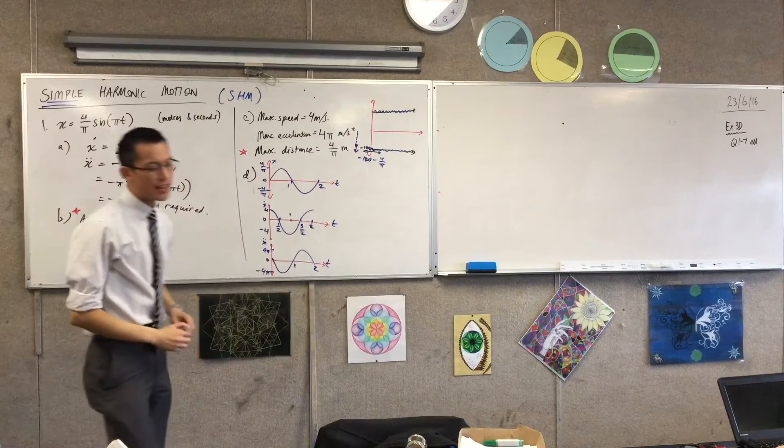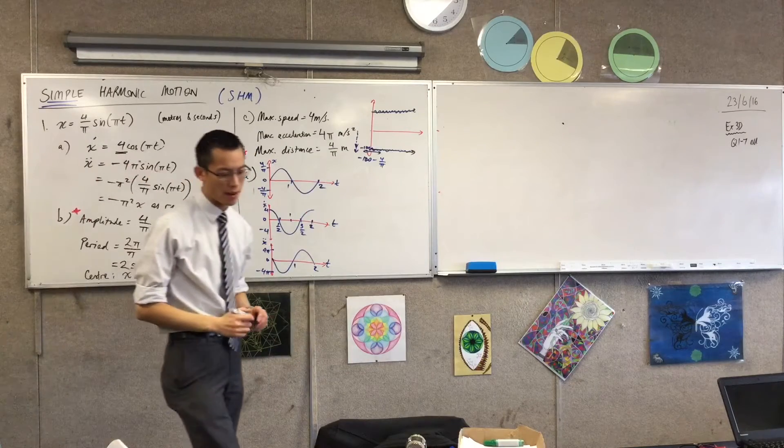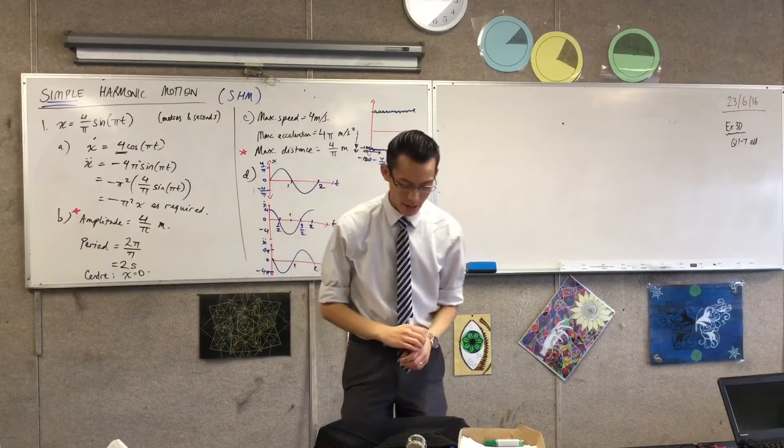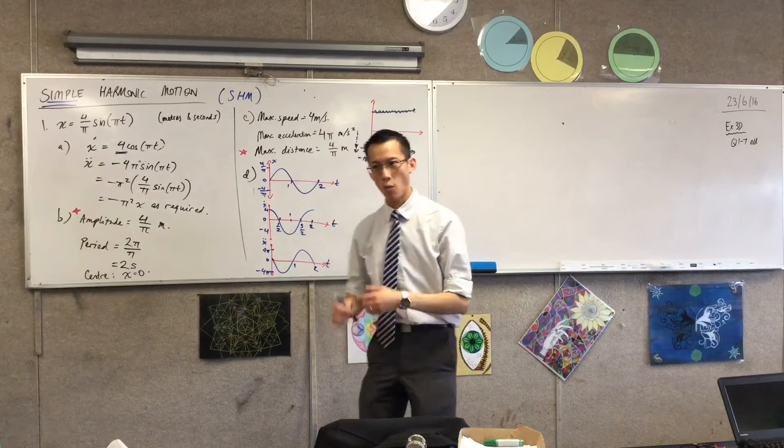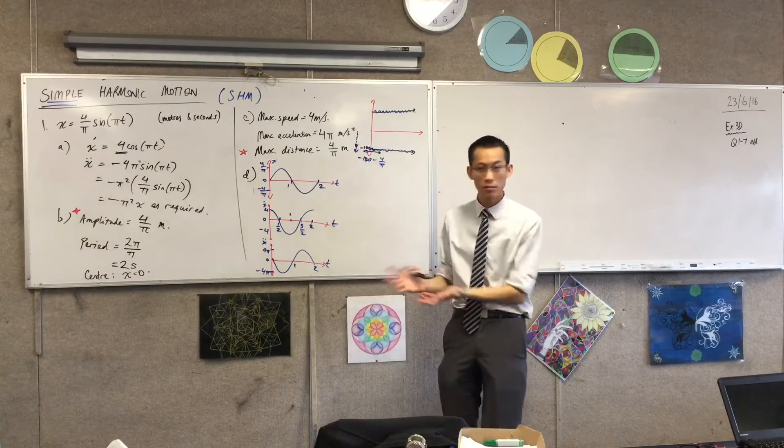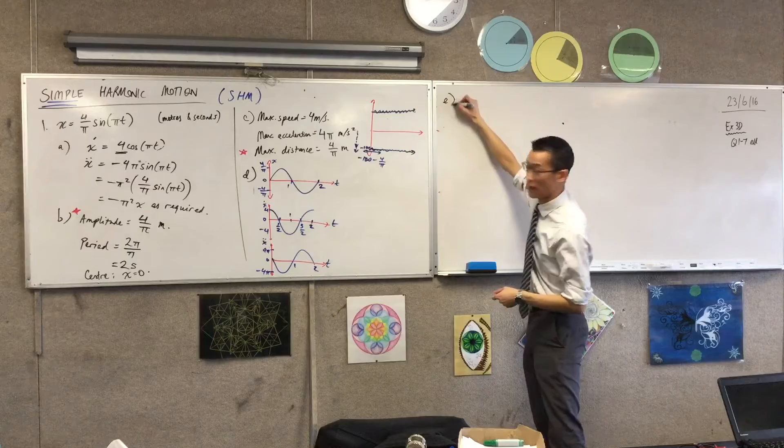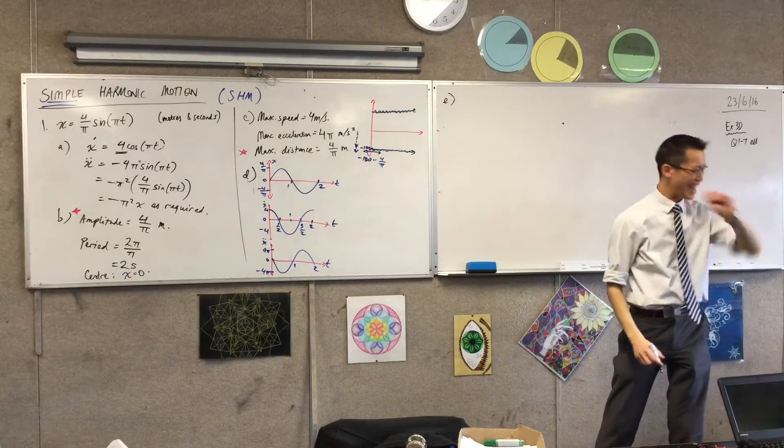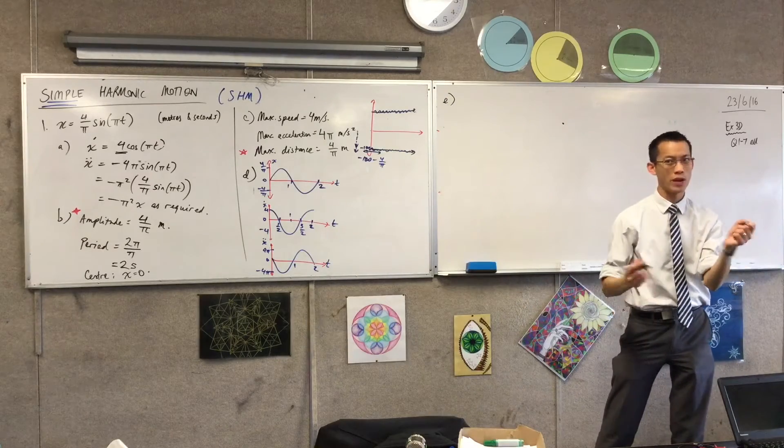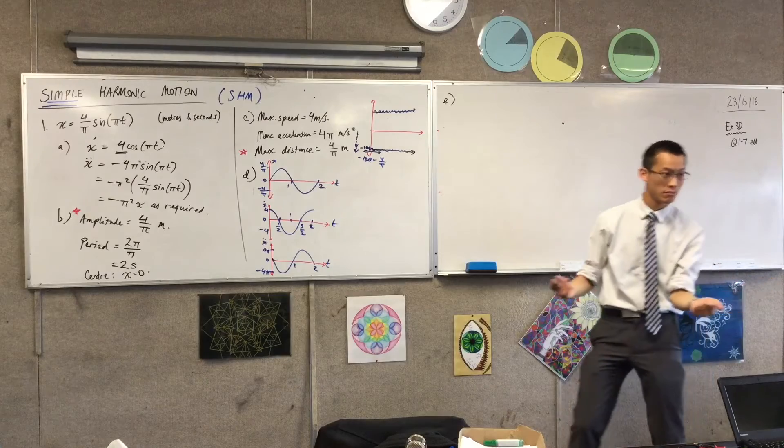It says, find the next two times the particle is at the origin and the velocities then. Now, what this is really doing is just, can you read the graph? It's all this is asking. Okay, we in fact have kind of answered these. They have to say next two times at the origin, because when are we first at the origin? Time's zero. Time's zero. Okay?